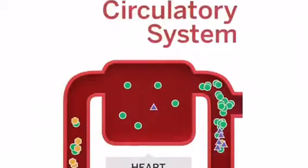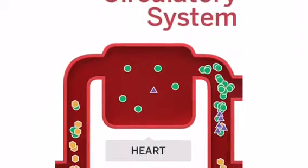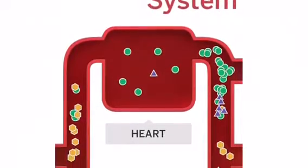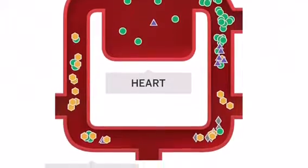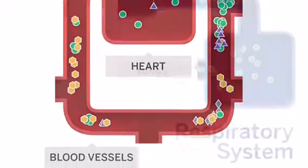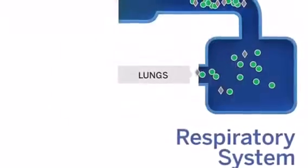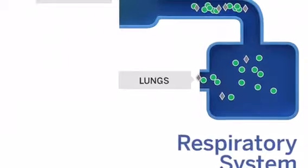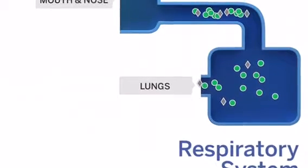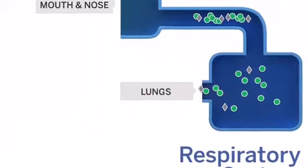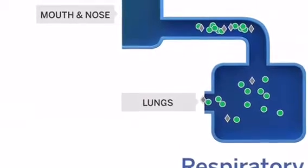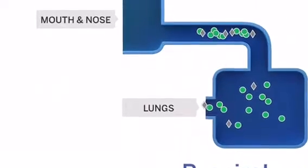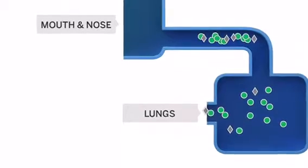The circulatory system moves molecules throughout your body through the heart and blood vessels. The respiratory system helps you breathe and bring oxygen to your cells. It does this through your mouth, nose, and lungs.